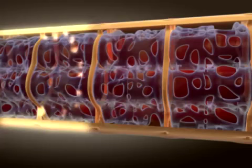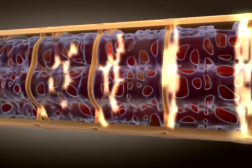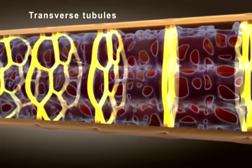If we look at a single muscle fiber, we see that an action potential travels across the entire sarcolemma and is rapidly conducted into the interior of the muscle fiber by structures called transverse tubules.